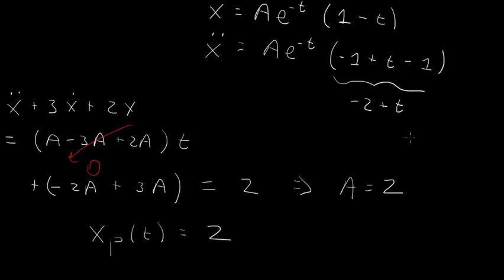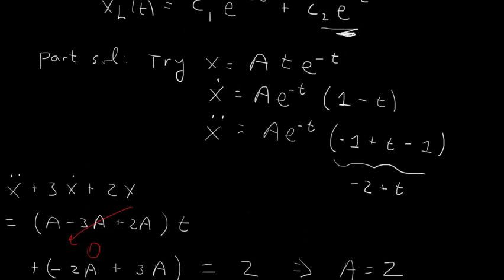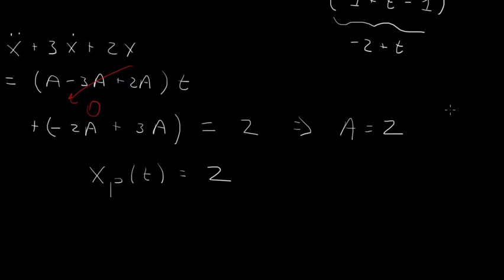So we get A equal to 2. We've found our particular solution: it equals 2t e to the minus t.